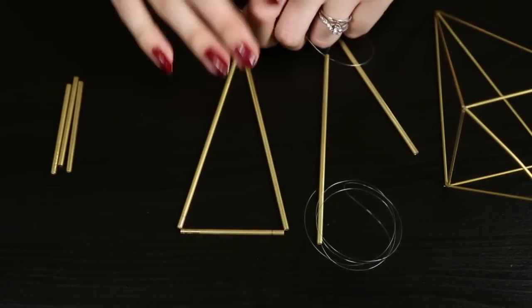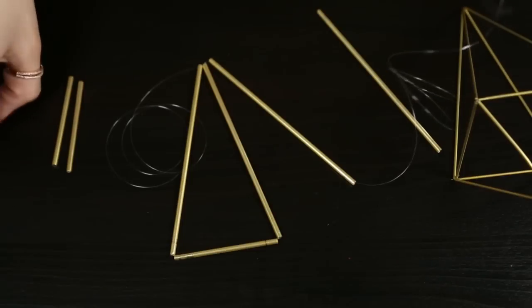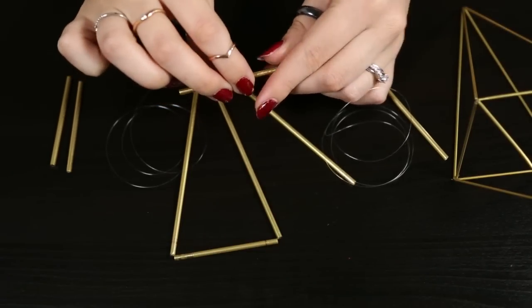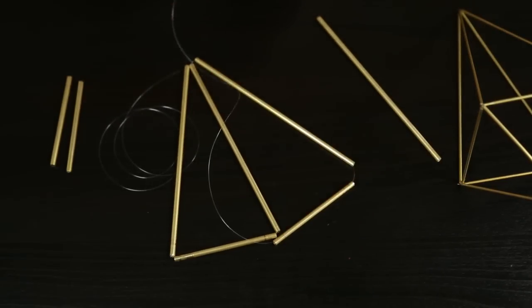You don't want the string to be loose because then your pipe will jiggle around in its spot and you don't want that. So now that you have that first triangle shape I'm then going to grab the other side of my string and I'm going to do the same thing.